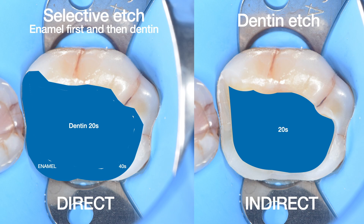For indirect restorations, we are going to etch the dentinal surface for 20 seconds only. Please note: at this stage, do NOT etch the enamel, because etching of the enamel will come later during the bonding appointment. At this stage we are only performing Immediate Dentine Sealing, so we etch only the dentine for 20 seconds.